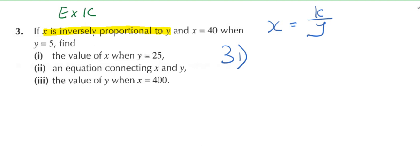Now we start. What do I do? First step, I need to find the constant K. So what do I do? X equals 40. Then you put in 40 equals K over 5, times 5 both sides. Then you realize K equals 800.